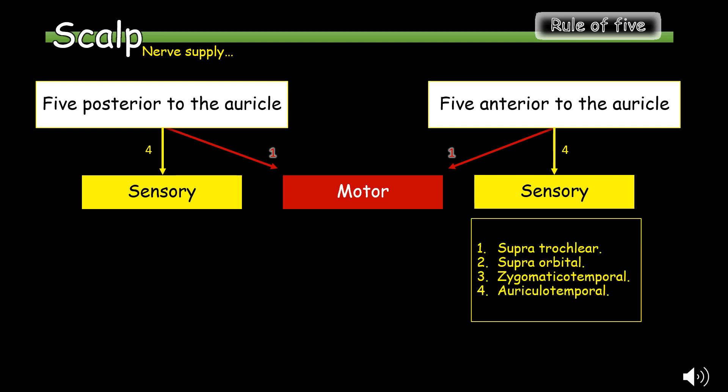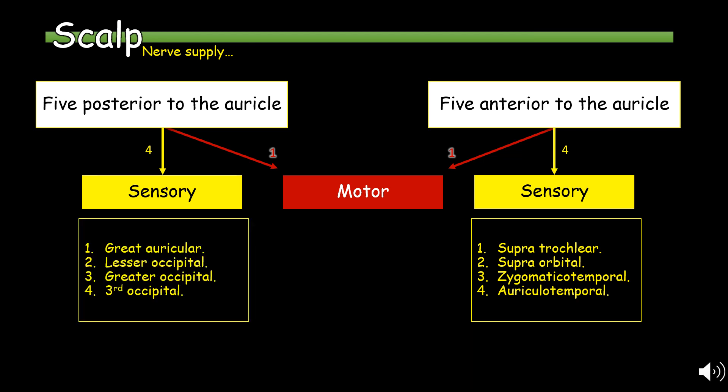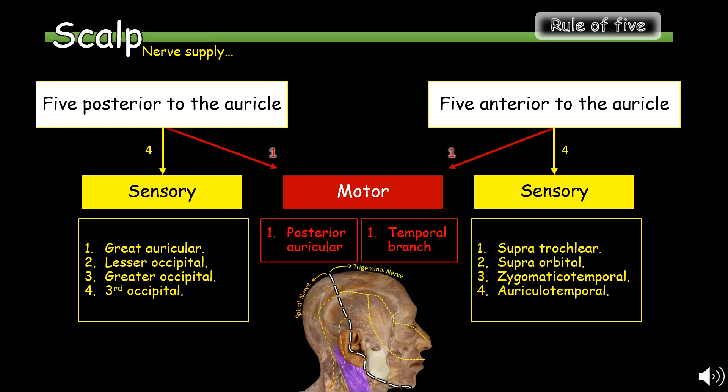The four sensory nerves anterior to the auricle include the supratrochlear nerve, the supraorbital nerve, the zygomaticotemporal nerve, and the auriculotemporal nerve. The four sensory nerves posterior to the auricle include the great auricular nerve, the lesser occipital nerve, the greater occipital nerve, and the third occipital nerve. The motor nerve posterior to the auricle is the posterior auricular nerve, and the motor nerve anterior to the auricle is the temporal branch.